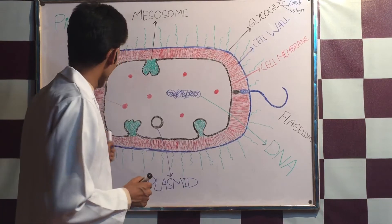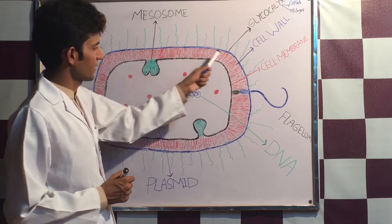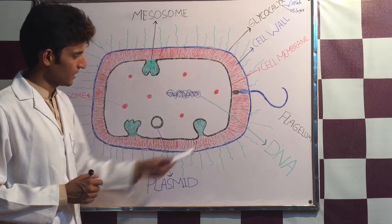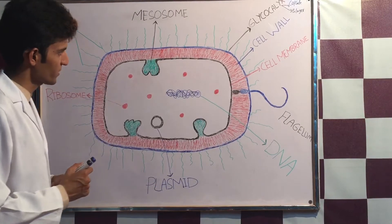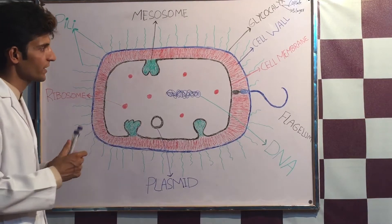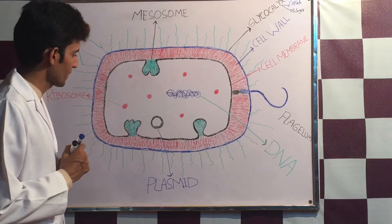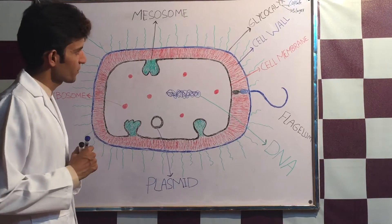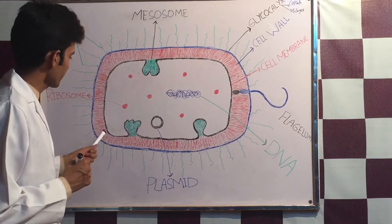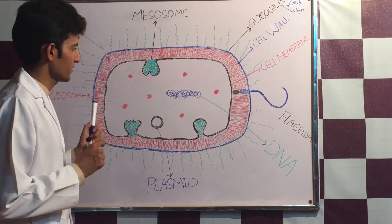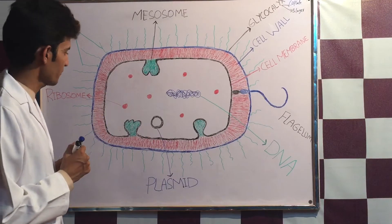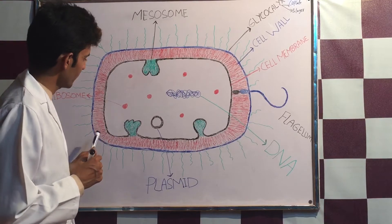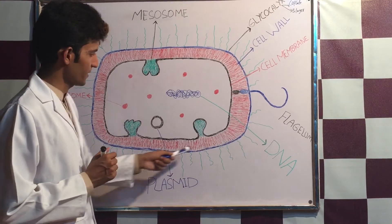The second structure is the cell wall. This is the structure on the basis of which we differentiate between gram-positive and gram-negative bacteria during the gram-staining technique. In gram-positive bacteria, the cell wall is thick because of a high component of peptidoglycan.